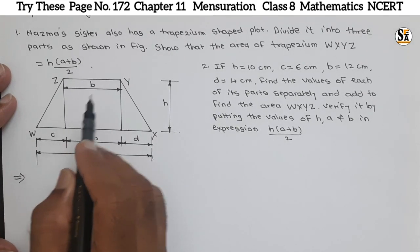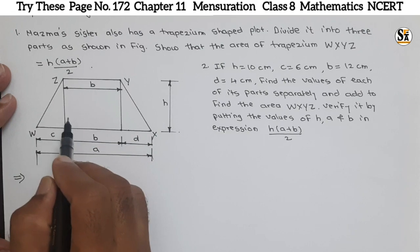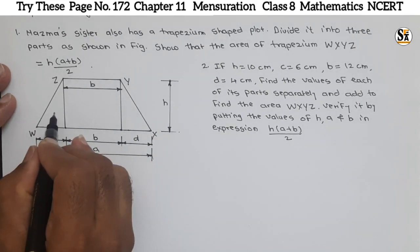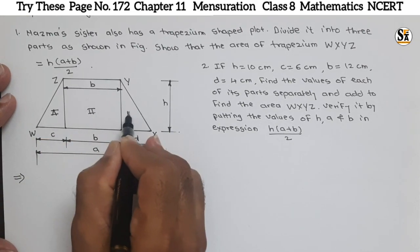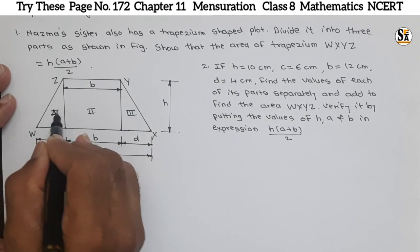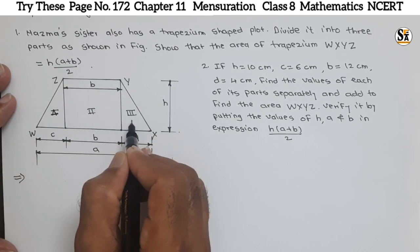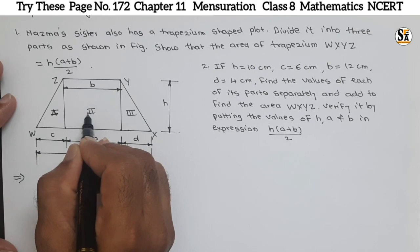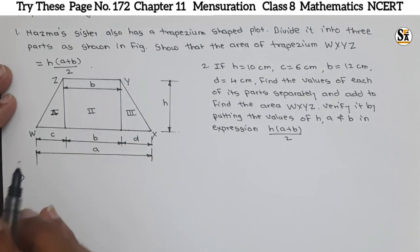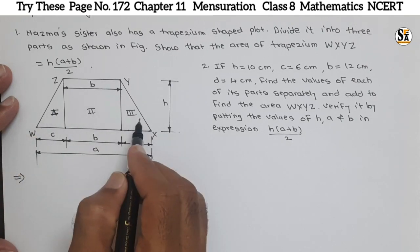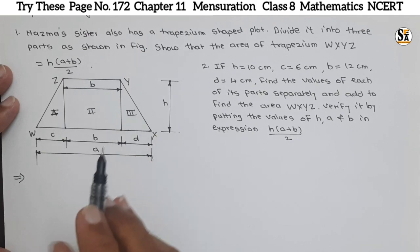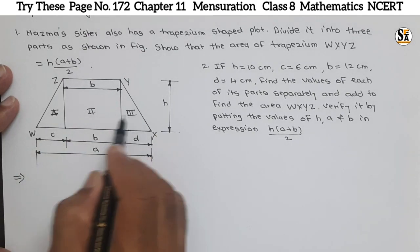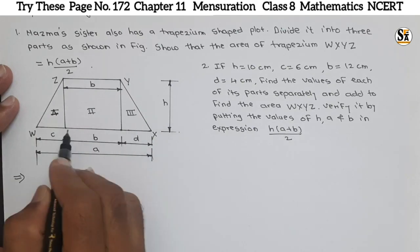Now, to prove this formula, this trapezium is divided into three parts. This is part one, then the second part, and the third part. So the first part and third part are triangles, and the second part is a rectangle. We know the formulas to calculate the area of a triangle and rectangle because these are basic figures. We will calculate the area of three parts and add them to get the total area of this trapezium.